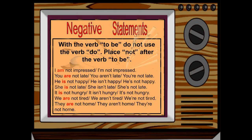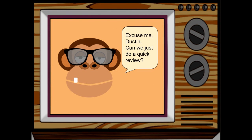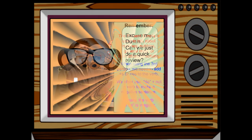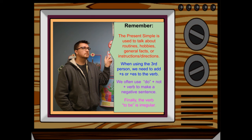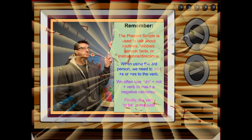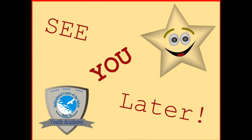Okay, let's take a break and review before we finish today's video. The present simple is used to talk about routines, hobbies, general facts, instructions, and directions. When using the third person, add S or ES to the verb. We use do plus not plus a verb to make a negative sentence. And always remember, the verb to be is irregular. Join us in our next episode when we continue looking at the present simple. Bye for now.